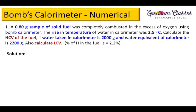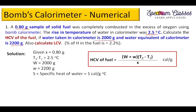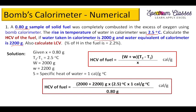Now solving Problem 1: x is the fuel sample, T2 minus T1 is the rise in temperature, capital W is 2000 grams (water taken), and small w is 2200 grams (water equivalent). Putting all values into the formula: W = 2000, w = 2200, rise in temperature = 2.5°C, multiplied by specific heat = 1 cal/g/°C.